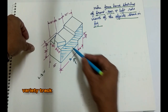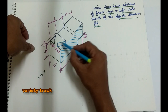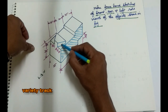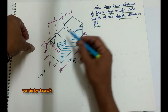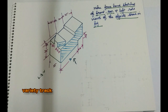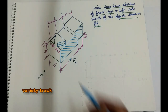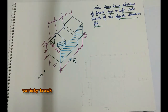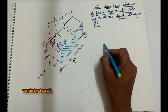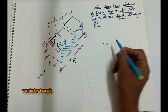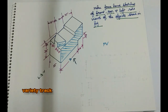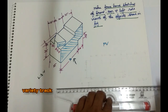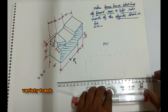We will make a freehand sketch. This is a full part view of the front view, general view, front view, and left side view. We'll put it inside the right screen.